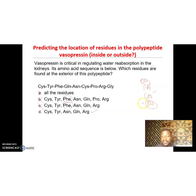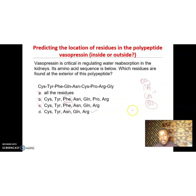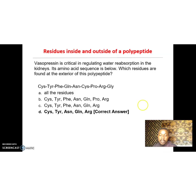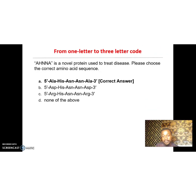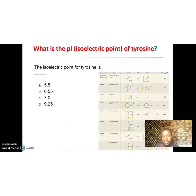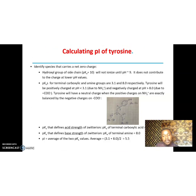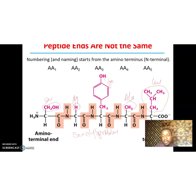Cysteine is a sulfur-containing amino acid with a reduced thiol group. Methionine is also a sulfur-containing amino acid, but its sulfur group is oxidized, unlike cysteine's. These are the two sulfur-containing amino acids, and cysteine is more soluble compared to methionine. Be sure to review the structures of both.